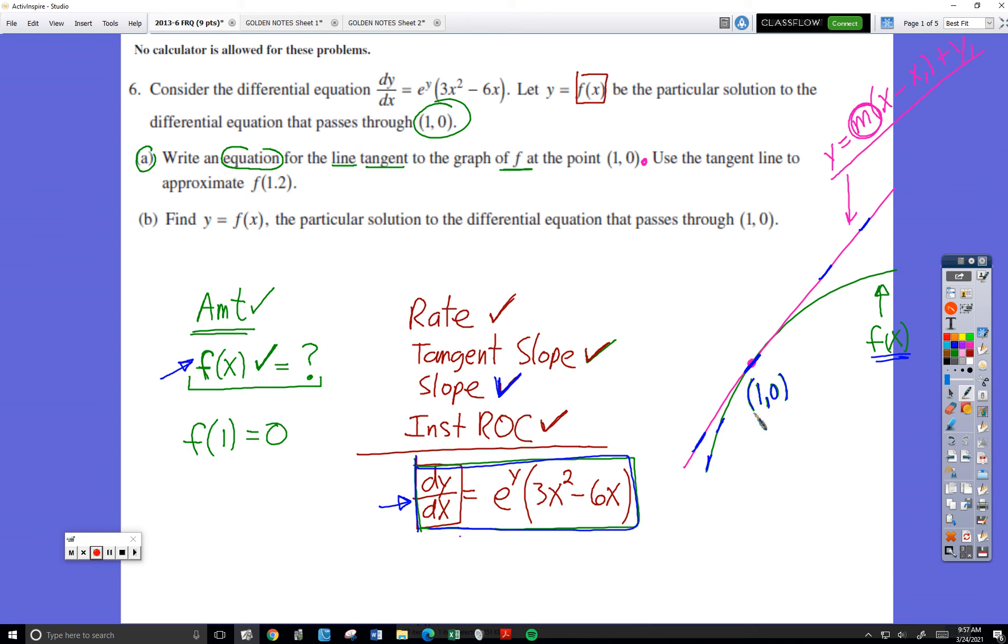So that's going to be dy/dx at 1, 0 must equal e to the 0 power, 3 times 1 squared, subtract 6 times 1. I could leave it like that but it's going to be a little hard to carry around. e to the 0 is 1. That's easy. 3 minus 6 would be negative 3 so negative 3.